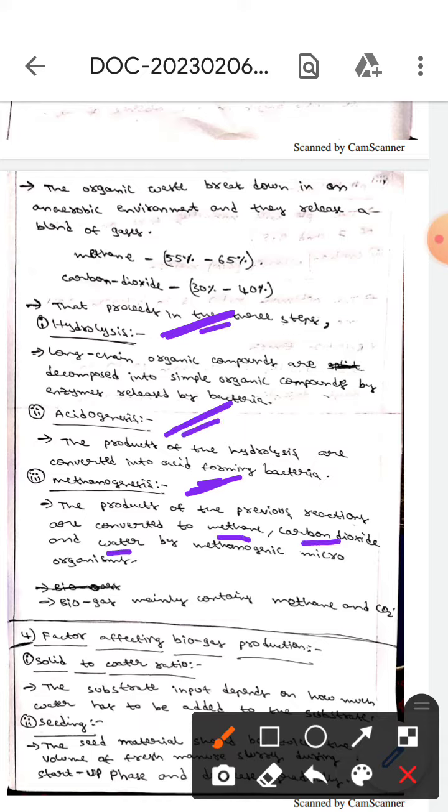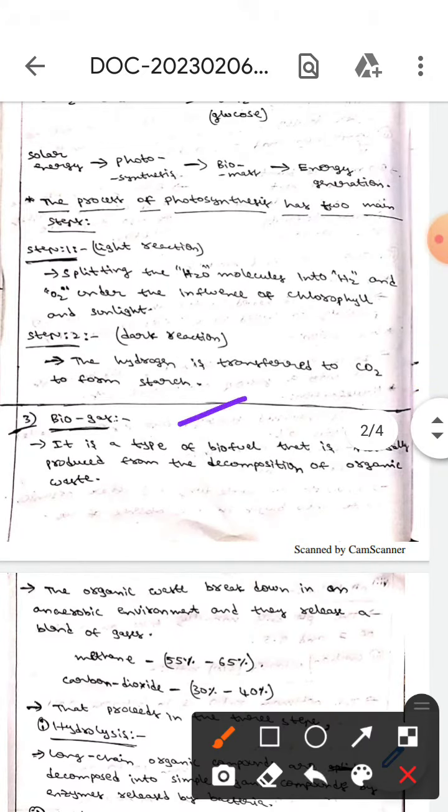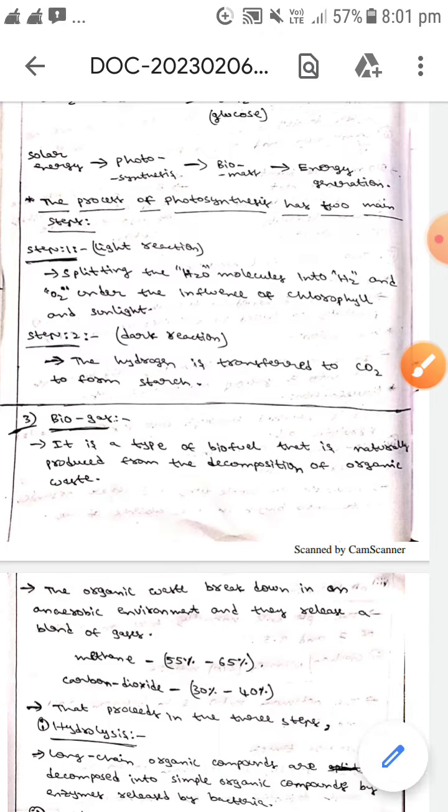If you observe here, the biogas mainly contains carbon dioxide and methane, methane and CO2. This is all about the biogas production. I hope you understand guys, thank you.